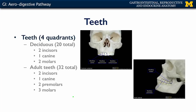You can conceptualize teeth as existing in four quadrants. The maxilla hosts two quadrants of teeth, and the mandible also hosts two quadrants. There are two types of teeth: deciduous or milk teeth, which erupt after birth and begin falling out at approximately five years of age and beyond. In terms of deciduous teeth, there are 20 total. In each quadrant, an individual typically has two incisors, one canine, and two molars — five per quadrant, four quadrants, for 20 total.